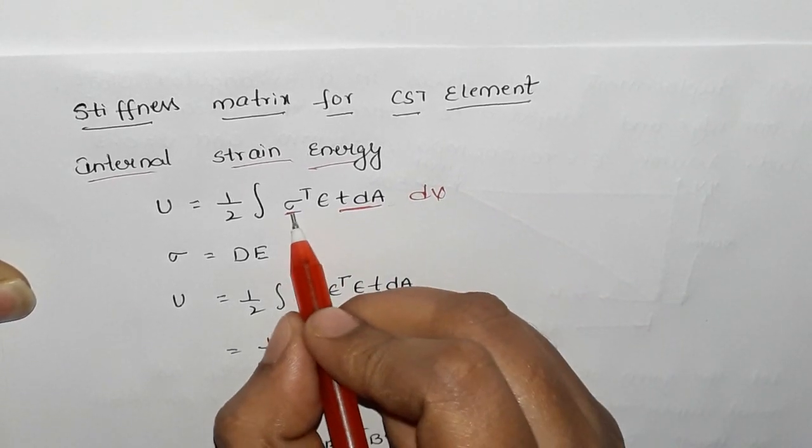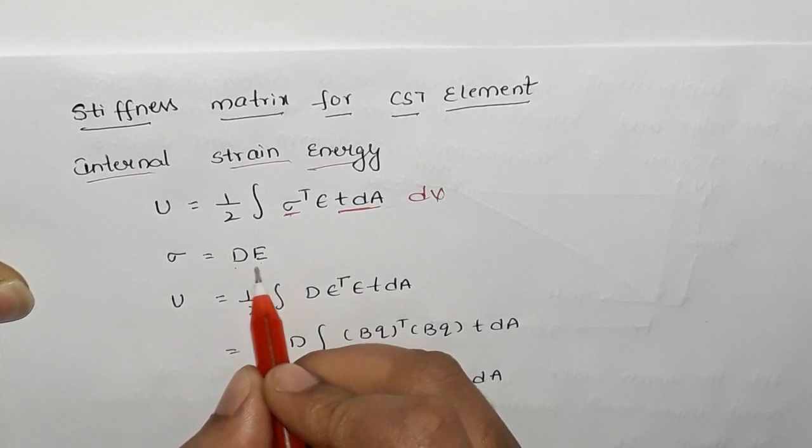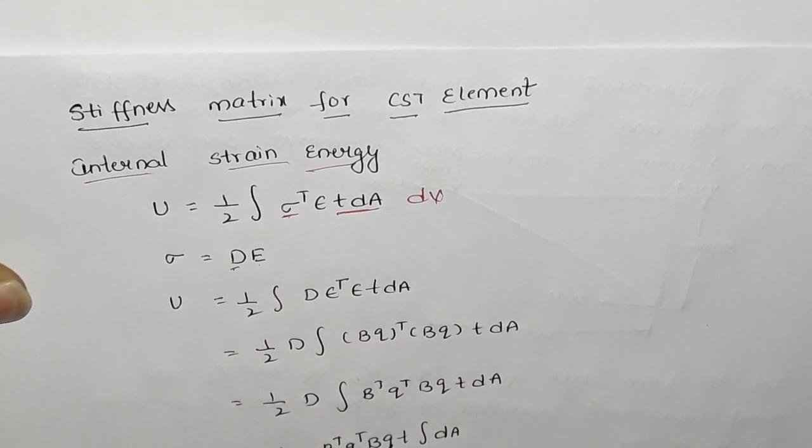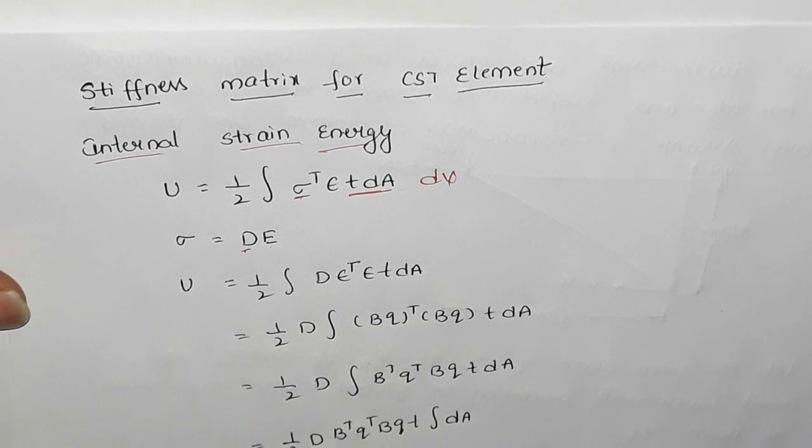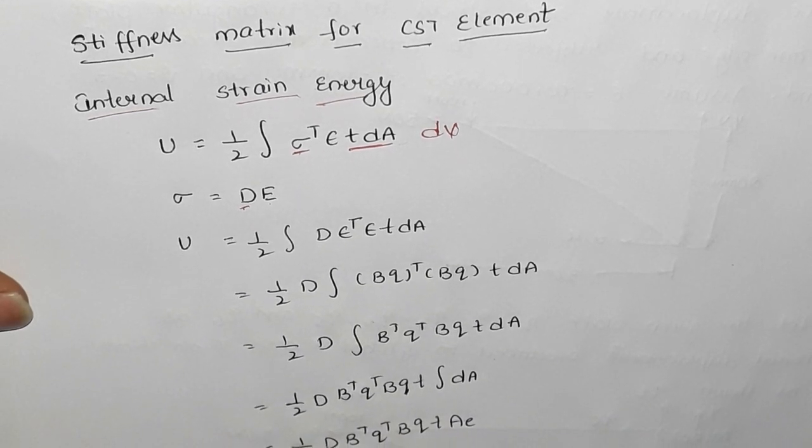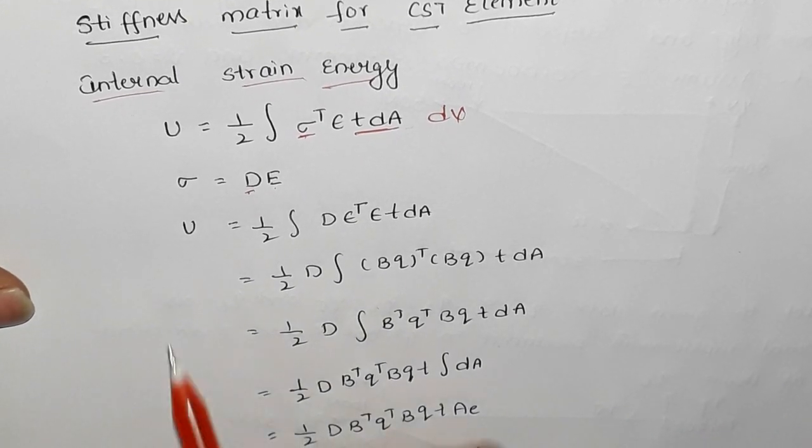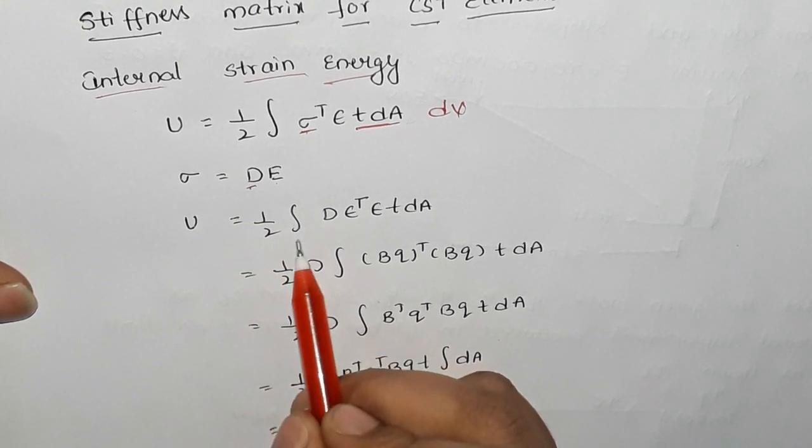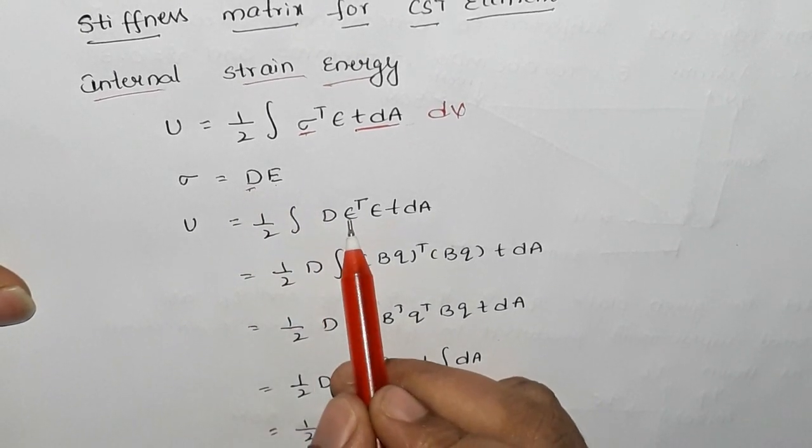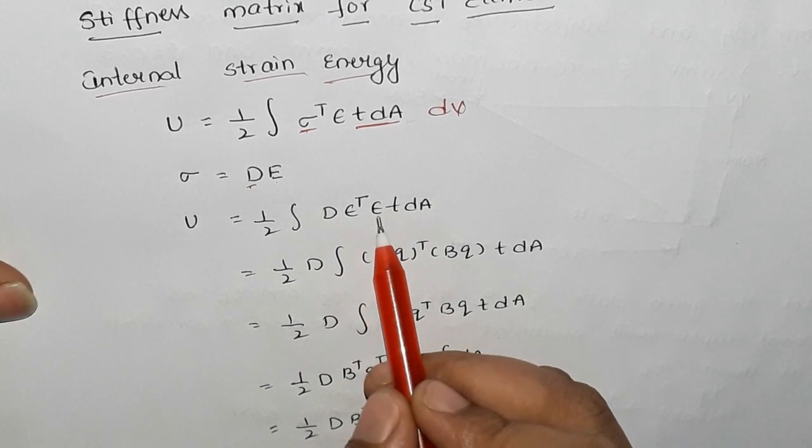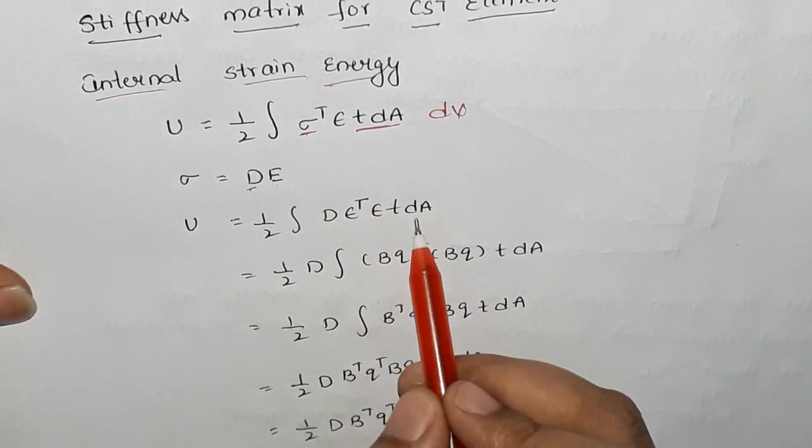But sigma is D into E. D is nothing but material matrix, E is Young's modulus. So, sigma value and then we substitute u equals half integral of D epsilon transpose E TDA.